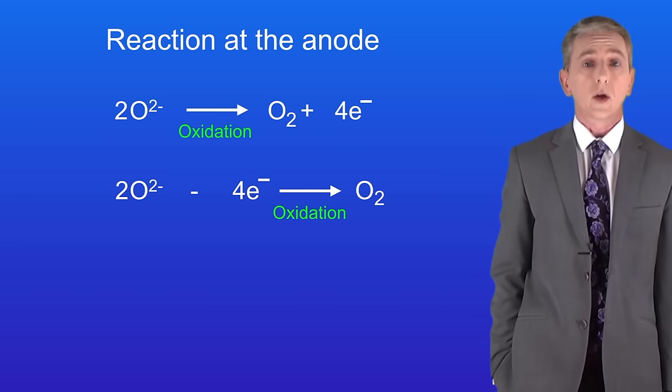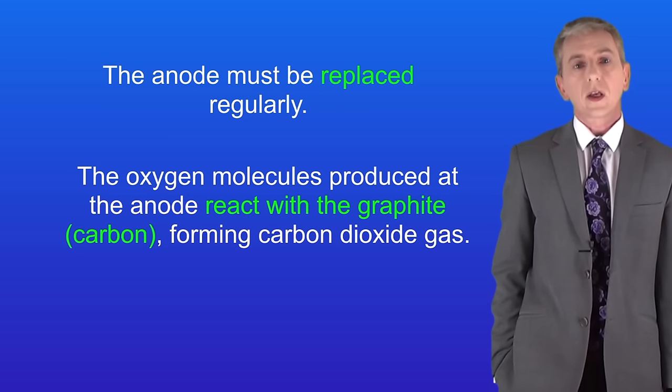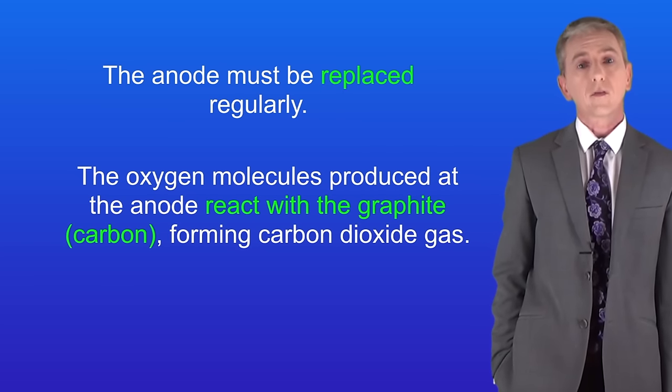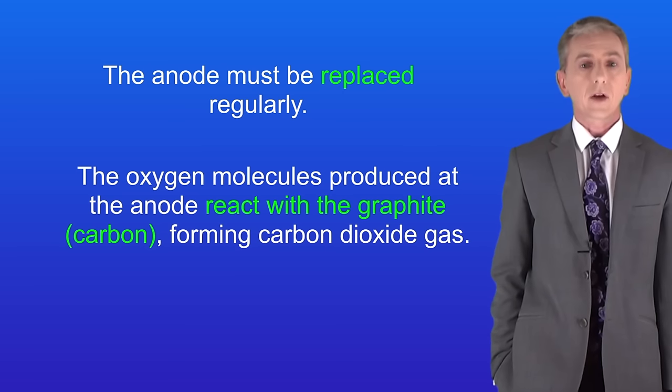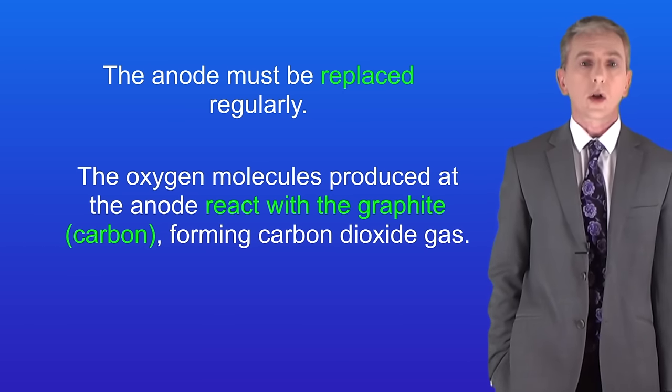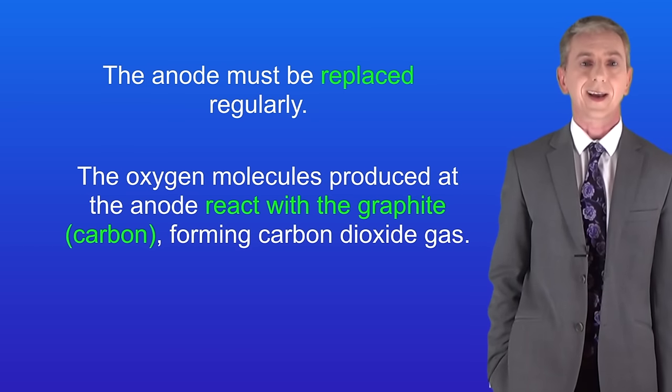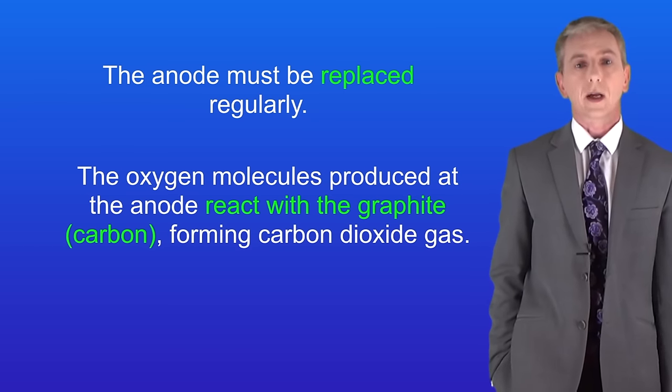Here's the final point about the anode. The anode must be replaced regularly. That's because the electrodes are made of graphite and that's a form of carbon. And these electrodes are around 900 degrees celsius. The oxygen molecules produced at the anode react with the graphite forming carbon dioxide gas. I'm showing that reaction here.